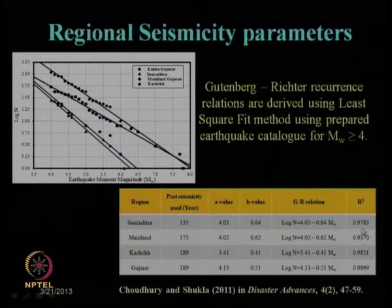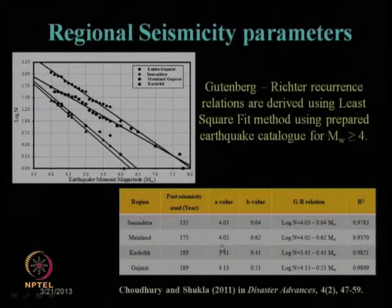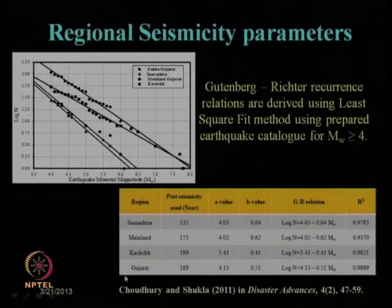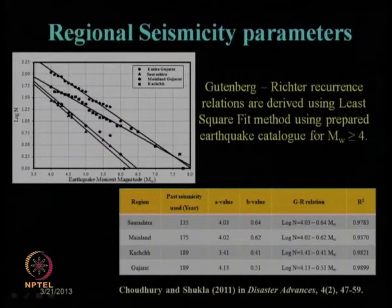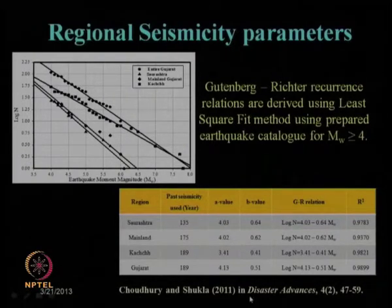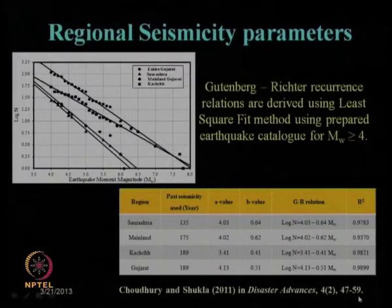The detailed study on regional seismicity parameters of Gujarat is available in the journal paper Choudhury and Shukla 2011 in Disaster Advances, volume 4, issue 2, pages 47–59. If one wants to know the details, one can refer to this journal paper.